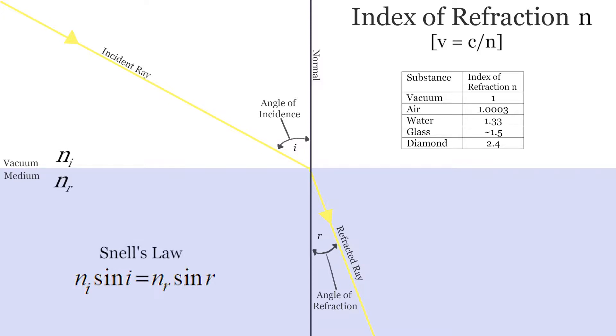So the change in n also describes how much the direction of light changes. Light would bend more traveling from air into water than from water into glass.